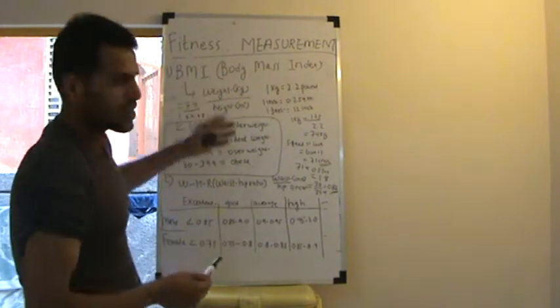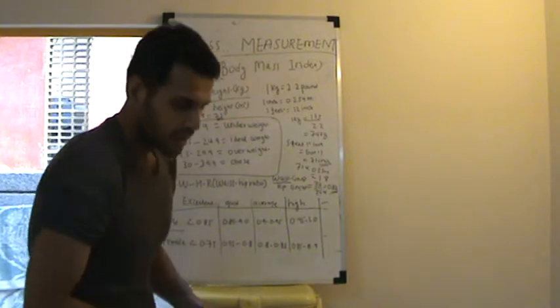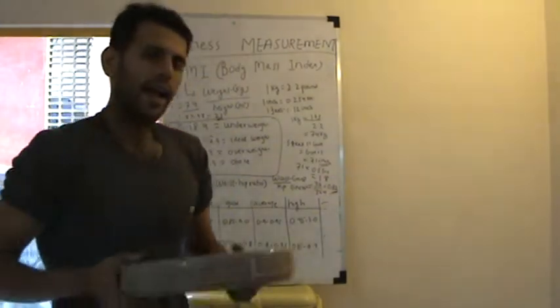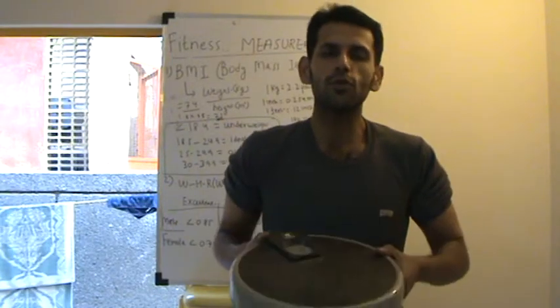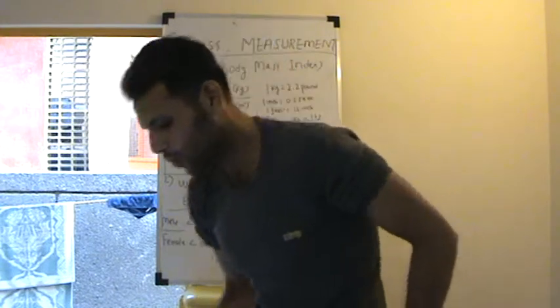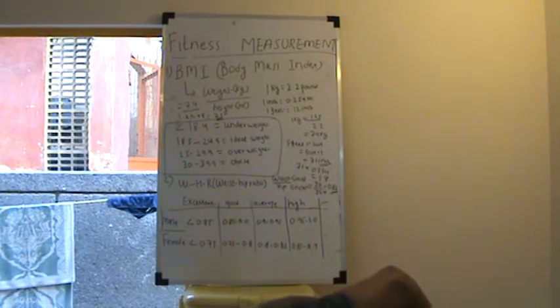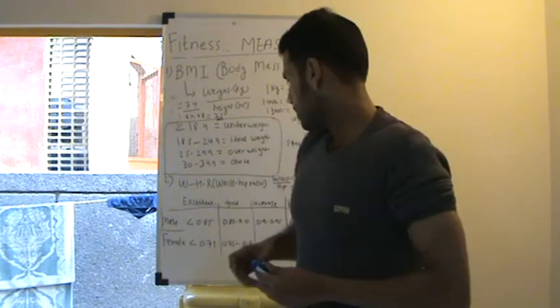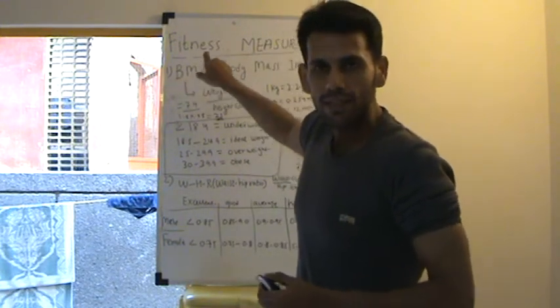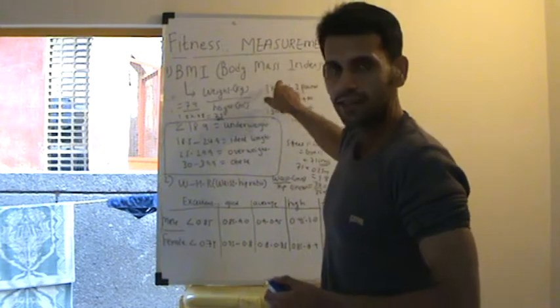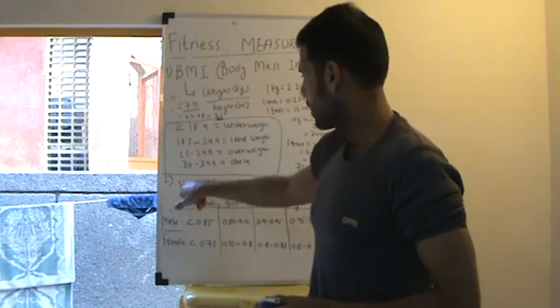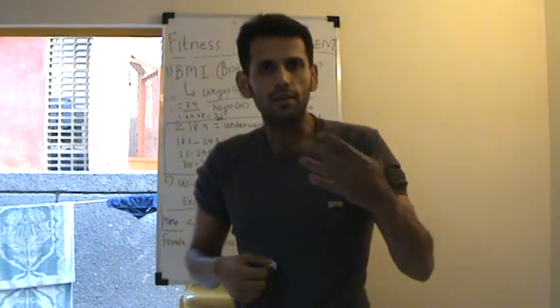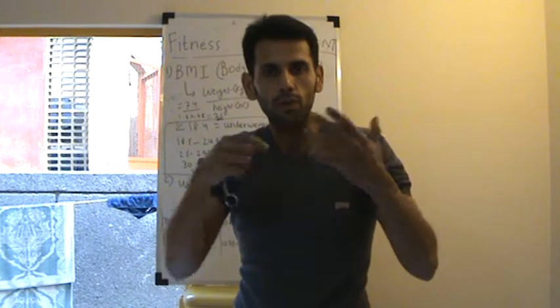So just in your home, by having an inch tape and a weighing scale, you can always judge how much overweight you are and how much you need to lose weight by using these two scales: Body Mass Index (BMI) and waist-to-hip ratio.